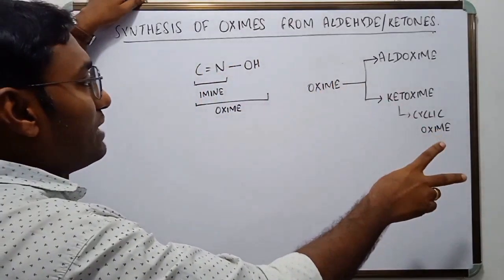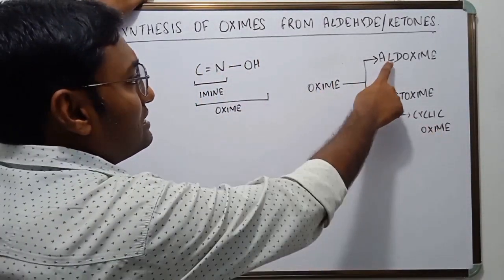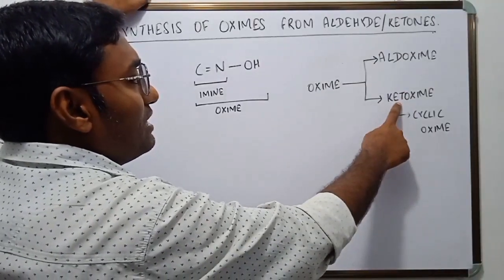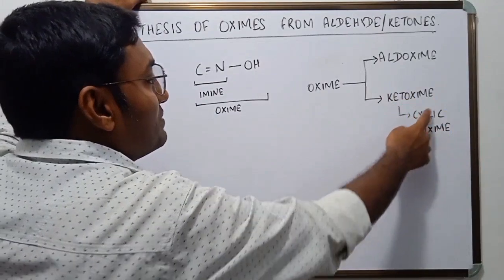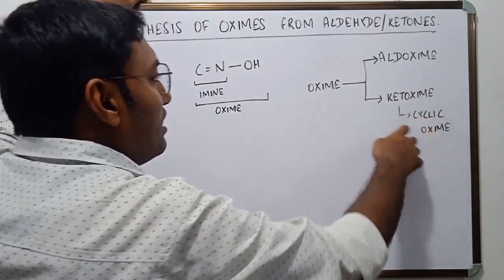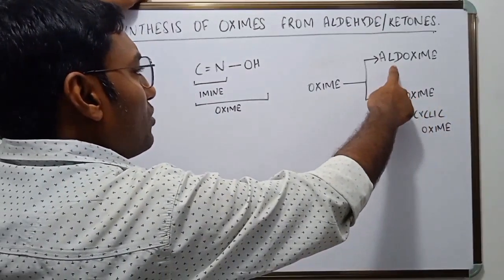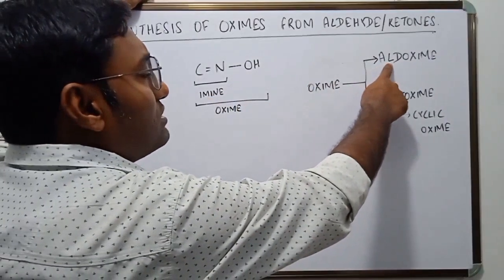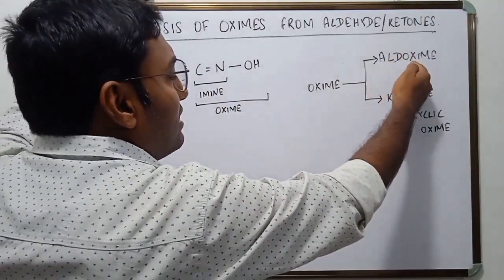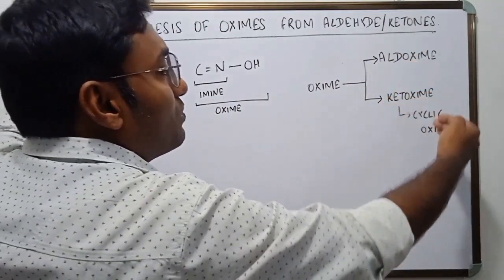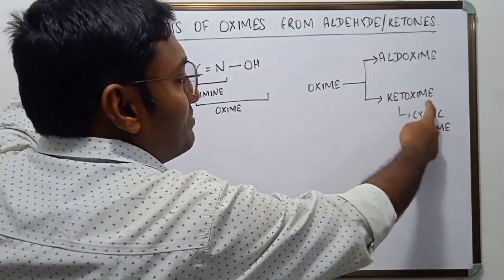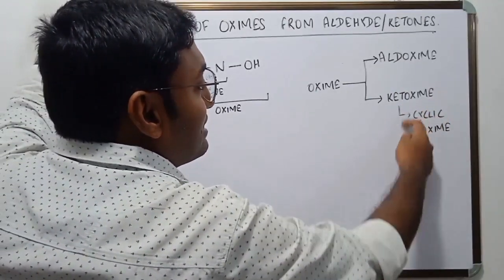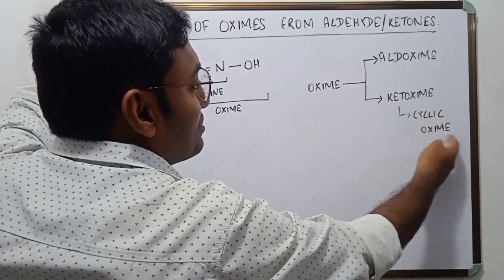Oxymes are of two types mainly. The first is aldoxyme and the second is ketoxyme. Ketoxyme has a subtype which is known as cyclic oxyme. An aldoxyme is derived from an aldehyde, a ketoxyme is derived from a ketone, and a cyclic oxyme is derived from a cyclic ketone — that is why it is a subtype of ketoxyme.